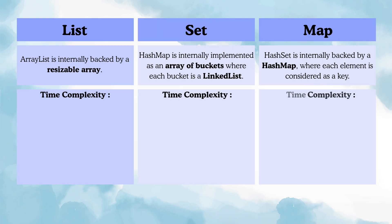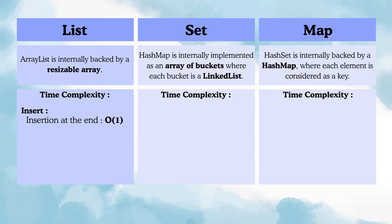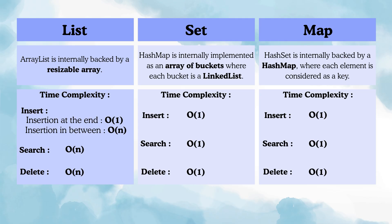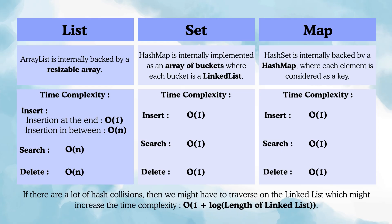Coming to time complexity: in ArrayList, adding at the end is O(1) on average. But adding in between requires shifting elements to the right, making it O(n). Searching or deleting a particular element is also O(n) because we may traverse the entire list. However, for Set and Map, insert, search, and delete are all O(1) on average — if you have the key, you can directly locate the bucket. The exception is if there are many hash collisions, traversing the linked list may increase time complexity slightly.